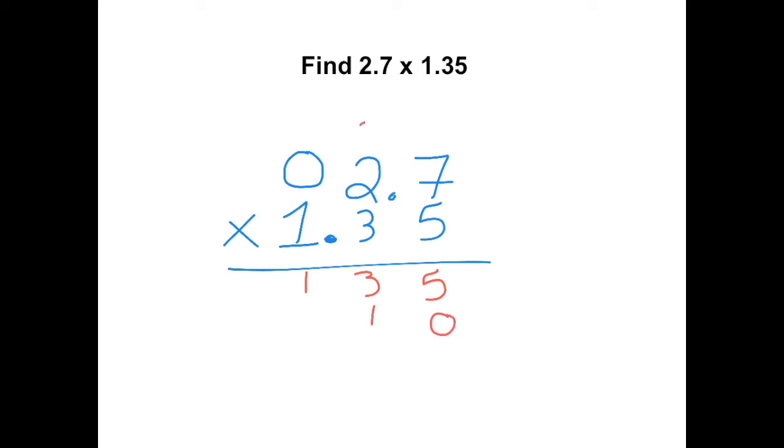7 times 3 is 21. 3 times 2 is 6, plus 2 more is 8. 3 times 0 is 0. Now we have to add two zeros.